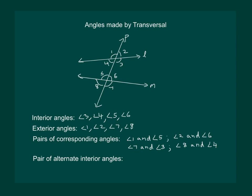Next is pair of alternate interior angles. So, clearly, angle 3 and angle 5 are interior angles and they are alternate. So, angle 3 and angle 5 are alternate interior angles.